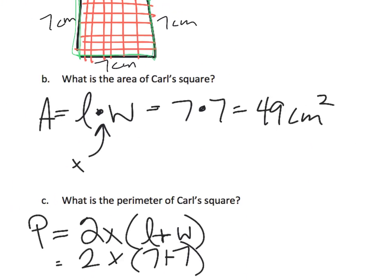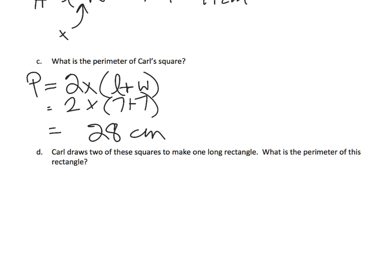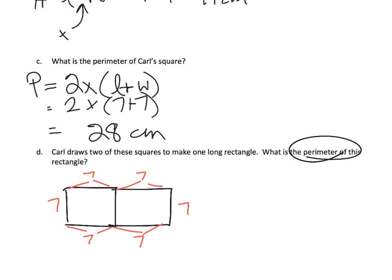Carl draws two of these squares to make one long rectangle. So here's one and here is another. What is the perimeter of this new rectangle? Keep in mind this distance is seven, this distance is seven. If we wanted to know the perimeter, one cool way to do it is we can say there's one, two, three, four, five, six seven sevens being added. So the perimeter in this case is six copies of seven, which is 42 centimeters.